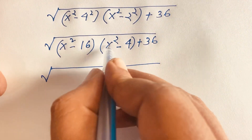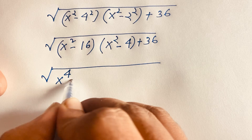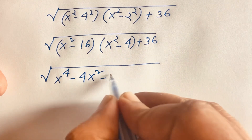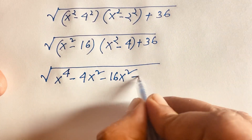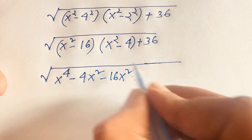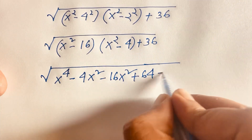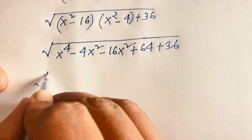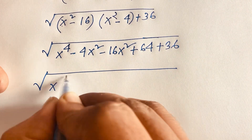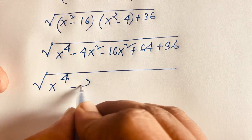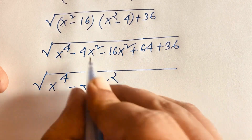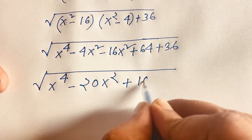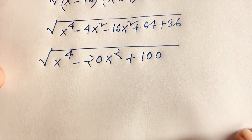Now expanding: (x squared minus 16)(x squared minus 4) gives x to the power 4, minus 4x squared, minus 16x squared, plus 64. That simplifies to x to the power 4 minus 20x squared plus 64. Adding 36 gives x to the power 4 minus 20x squared plus 100.